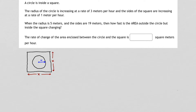When the radius is 5 meters and the sides are 19 meters, how fast is the area outside the circle but inside the square changing? We shade in the area that's outside the circle but inside the square. That is another thing that's changing, because as the sides change, that area between the two will also change.